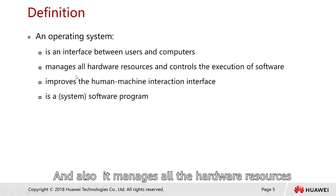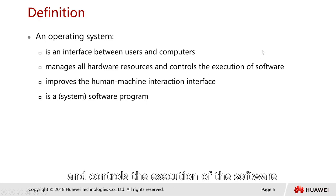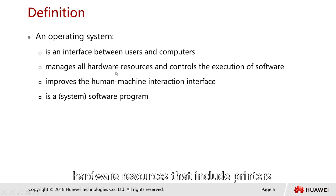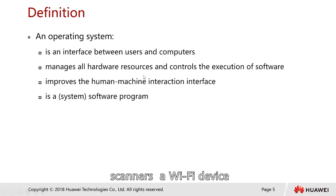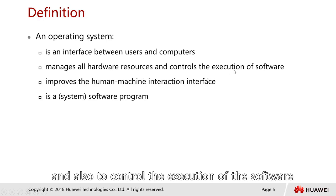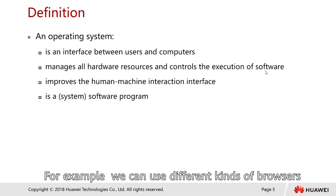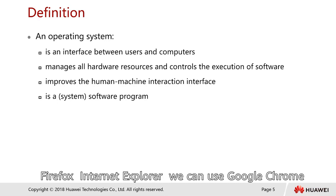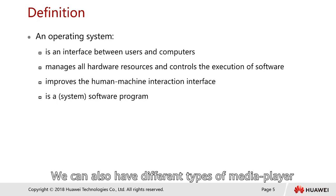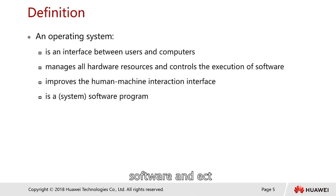The OS manages all hardware resources and controls the execution of software. Hardware resources include printers, scanners, and Wi-Fi devices. We can download many kinds of different software and run programs — for example, different browsers like Firefox, Internet Explorer, or Google Chrome — as well as different types of media player software.